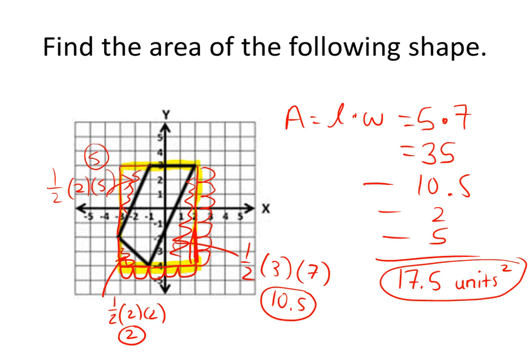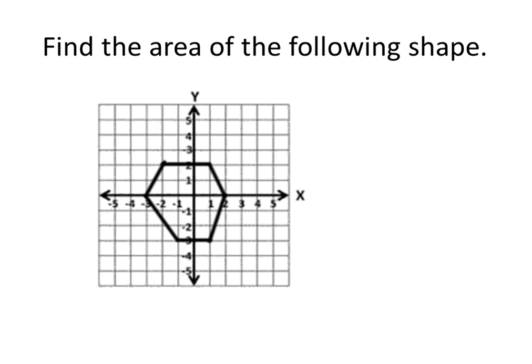I'm going to do one more example. Find the area of the following shape. My first step is to make a rectangle — to do that, I'm going to add in some extra triangles. Sometimes you might also have to add in extra rectangles in order to make a large rectangle. The first step is to find the area of that bounding rectangle.